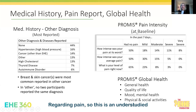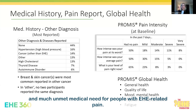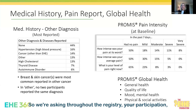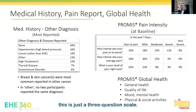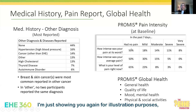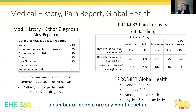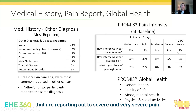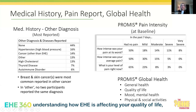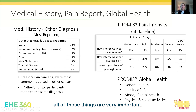Regarding pain: this is an understudied and unmet medical need for people with EHE-related pain. We ask about pain throughout the registry. At baseline, we use a three-question pain scale — one of two pain scales. A number of people report no pain at baseline, but we also have a number reporting severe and very severe pain. We want to understand better how to treat that pain. The global health scales assess how EHE is affecting quality of life, social activities, and work — all very important outcomes.